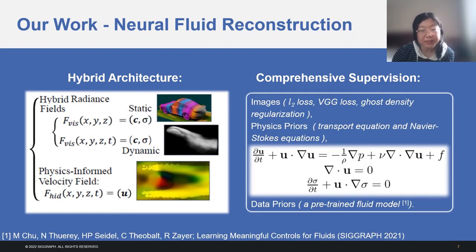On such an architecture, we propose comprehensive supervision from images, physical priors, and data priors. Regarding images, we applied an L2 loss, a VGG loss, and a ghost density regularization. Regarding physics, transport equation and Navier-Stokes equations are used as soft constraints. As mentioned previously, we get the derivatives using auto-differentiation and the network models are trained to minimize these equations with an L2 error. In addition, we use a pre-trained fluid model to prevent sub-optimal solutions.